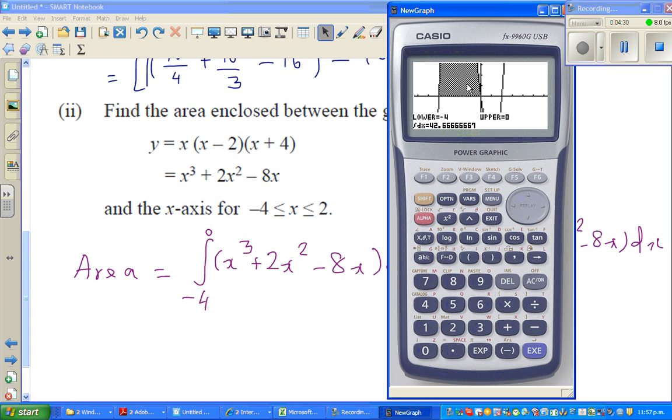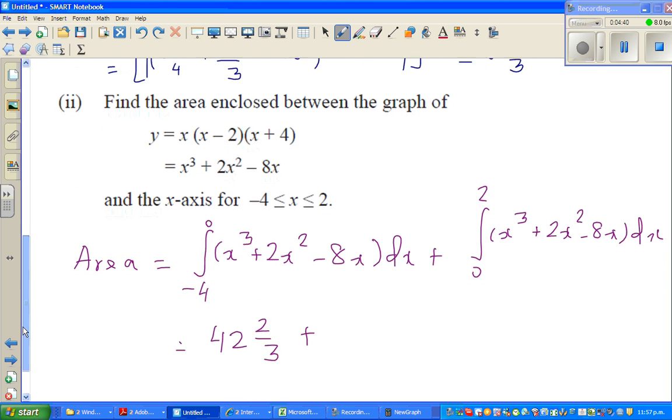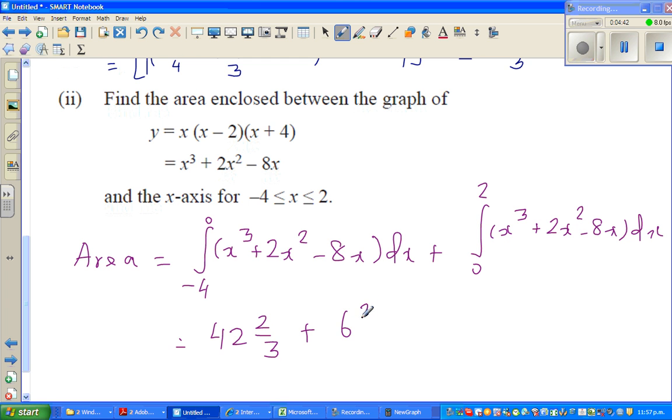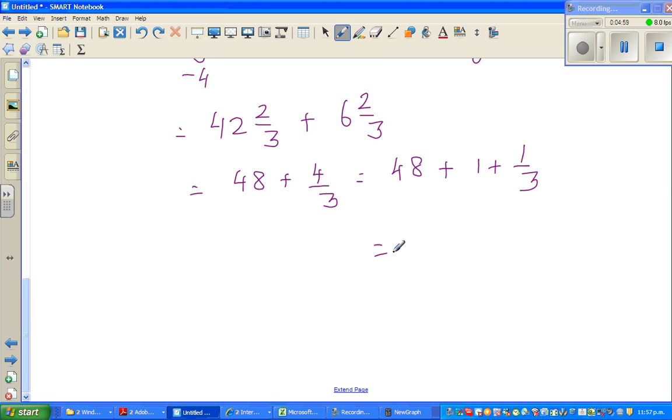So, this area is 42 and 2 thirds. So, I can say the answer is 42 and 2 thirds plus this was 6 and 2 thirds. So, this is 48 plus 4 thirds, which is 48 plus 1 plus 1 third. So, the final answer is 49 and 1 third unit squared.